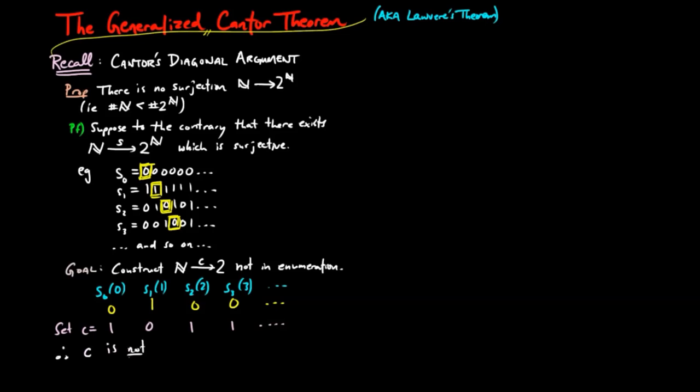Therefore, c is not in the enumeration s, since for each i in the natural numbers, c evaluated at i is not equal to s sub i evaluated at i. And that completes the proof.